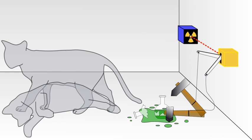If one has left this entire system to itself for an hour, one would say that the cat still lives if meanwhile no atom has decayed. The psi function of the entire system would express this by having in it the living and dead cat, pardon the expression, mixed or smeared out in equal parts. It is typical of these cases that an indeterminacy originally restricted to the atomic domain becomes transformed into macroscopic indeterminacy, which can then be resolved by direct observation. That prevents us from so naively accepting as valid a blurred model for representing reality. In itself, it would not embody anything unclear or contradictory. There is a difference between a shaky or out of focus photograph and a snapshot of clouds or fog banks.